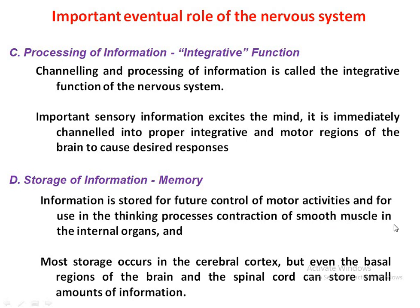The stored information is used for contraction of different muscles in internal organs as well as different structures of our body. Most storage occurs in the cerebral cortex, which is the region where the maximum information can be stored. The basal regions of the brain and the spinal cord can also store a small amount of information. The cerebral cortex is mainly responsible for memorization so that information can be used for future use.